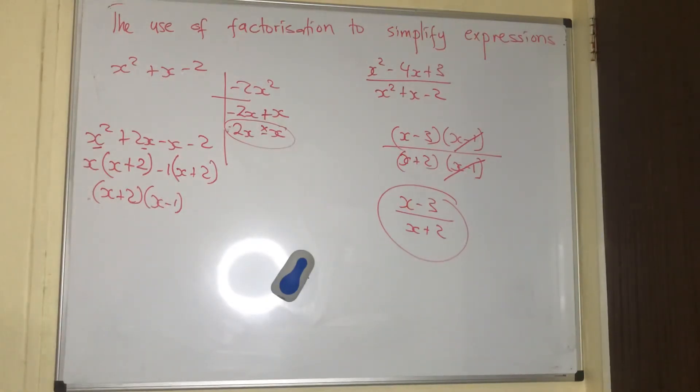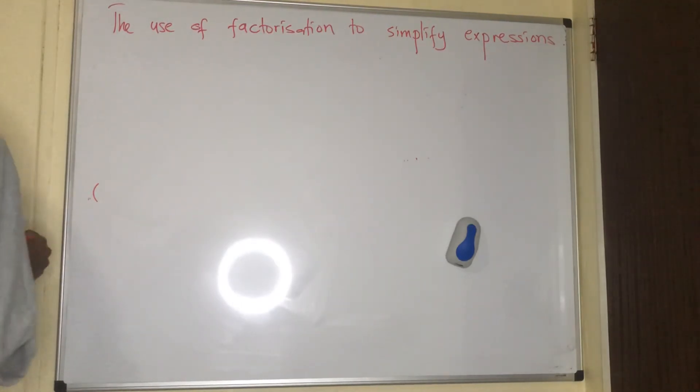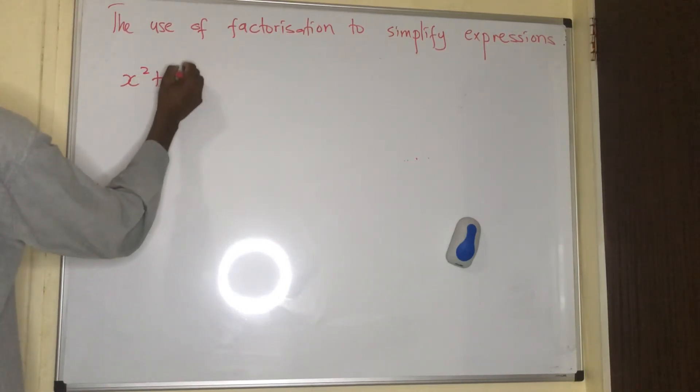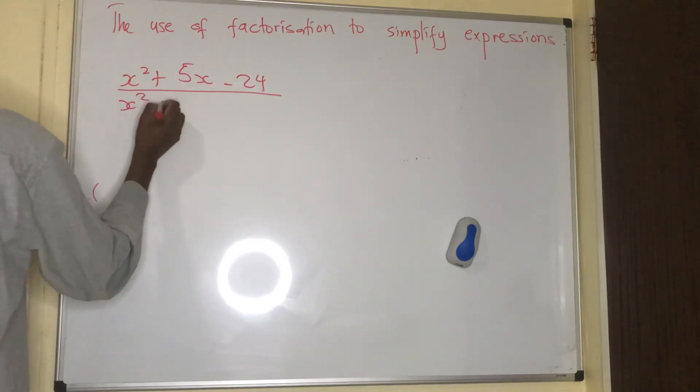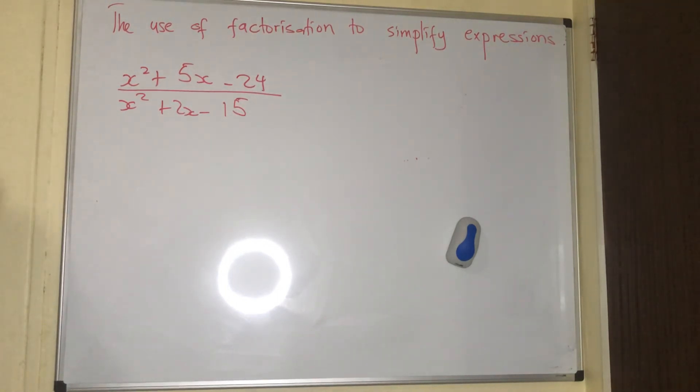I'm going to give you homework. We need to practice on the use of factorization to simplify expressions. x squared plus 5x minus 24 divided by x squared plus 2x minus 15. I'm tempted to give you two just for you to practice more. 2a squared plus 7a plus 3 divided by 4a squared minus 1.